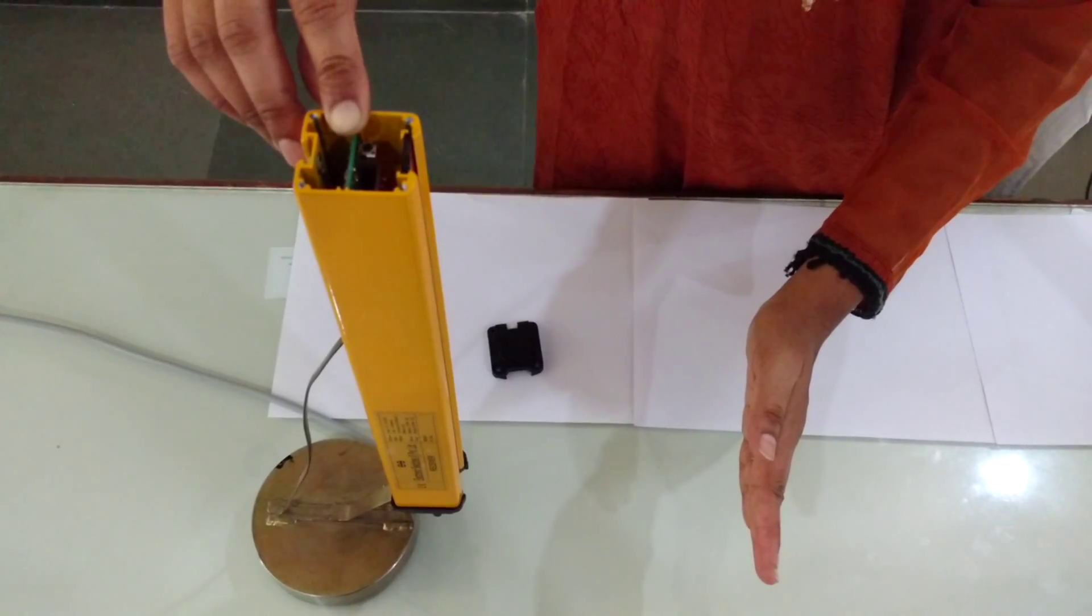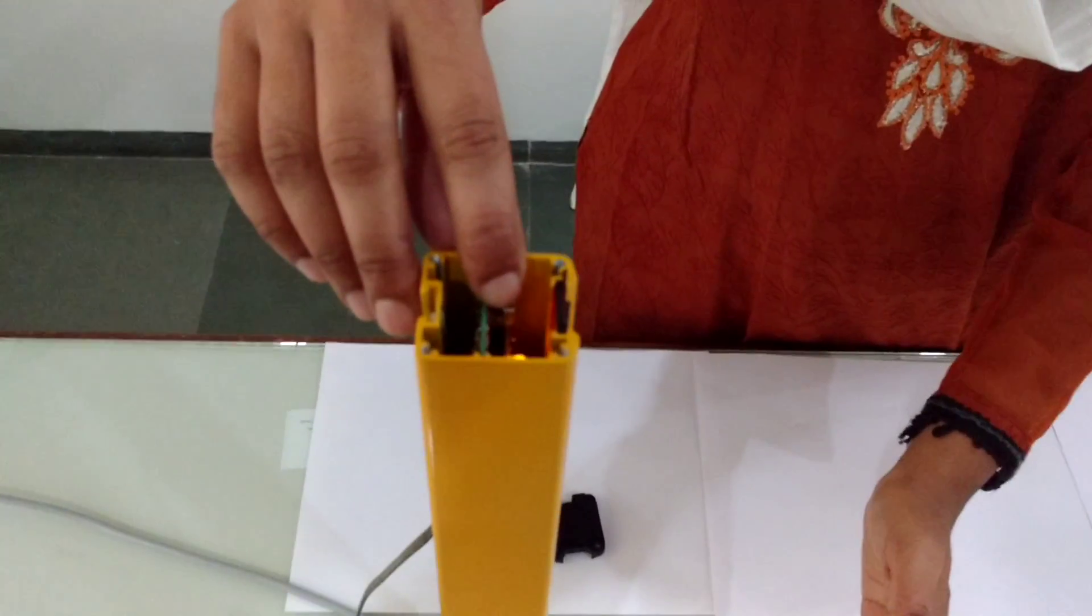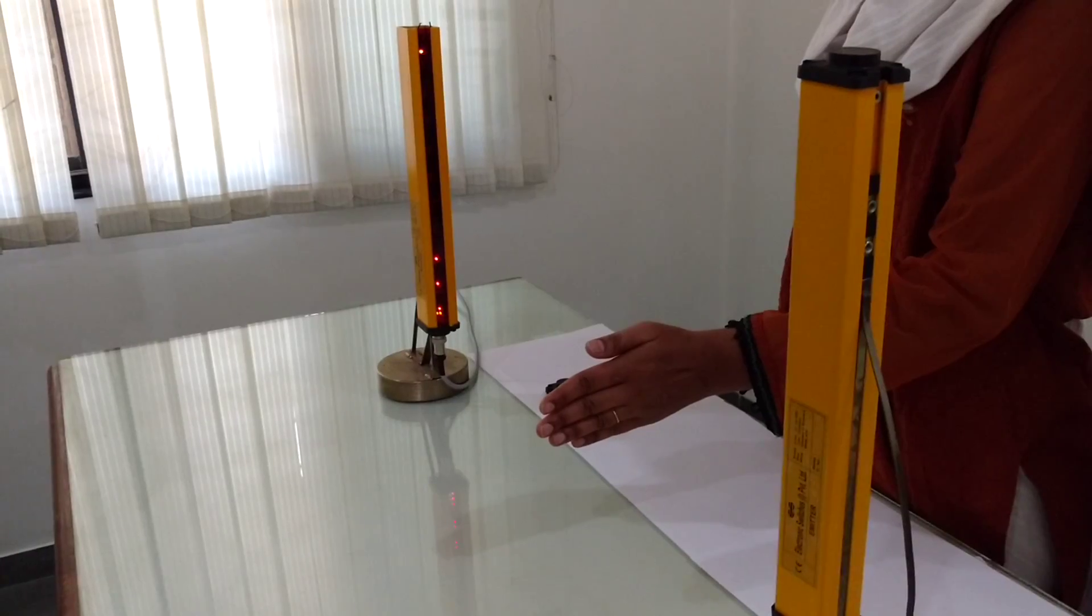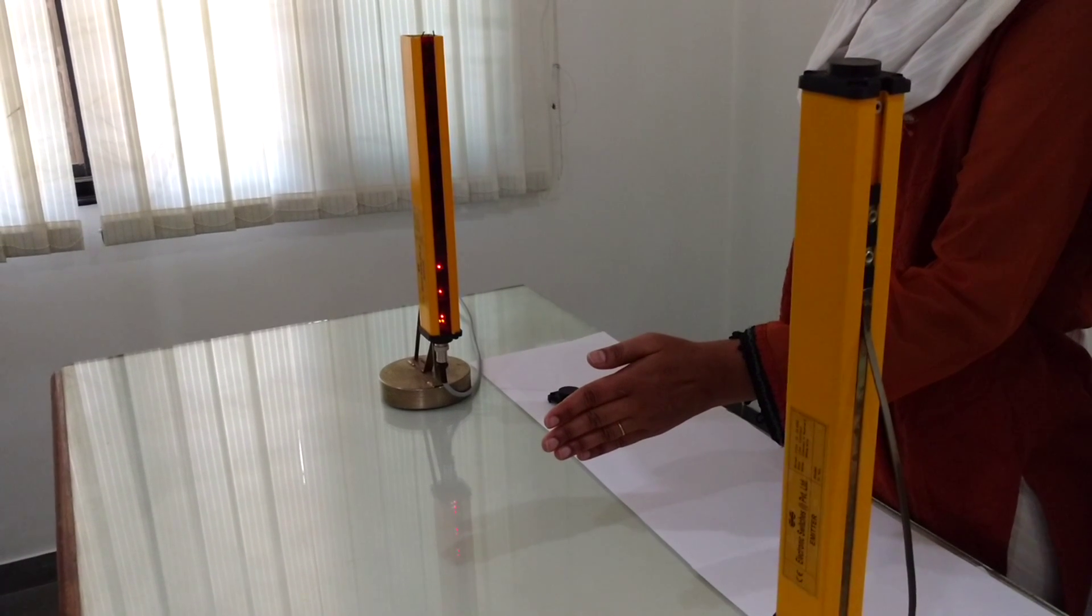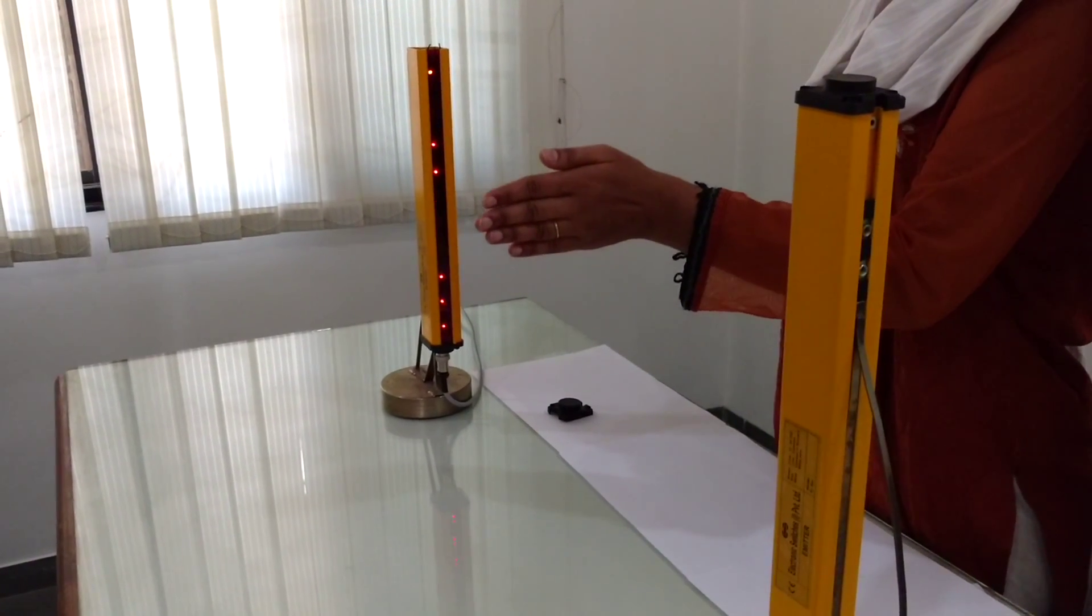Now keep the required beams blocked and press the bypass switch for 3 seconds. Now the beams are in bypass mode but the other beams are working as shown.